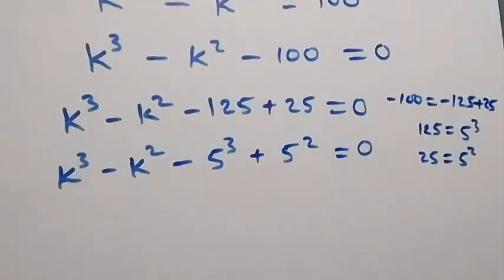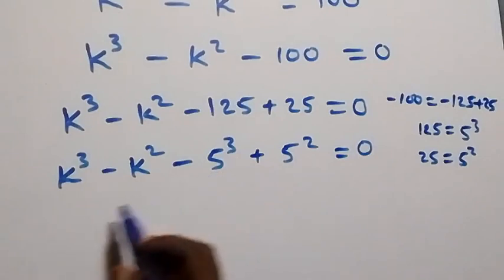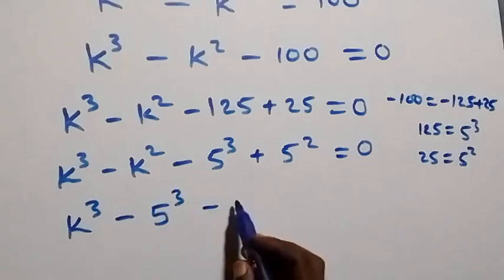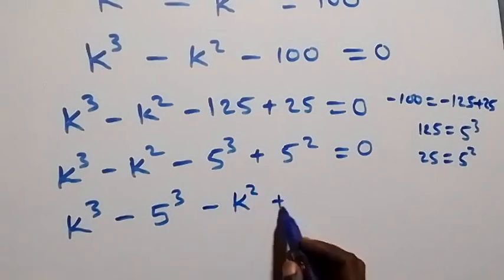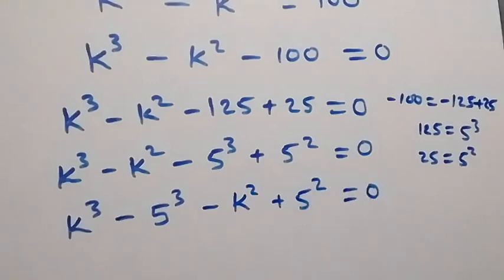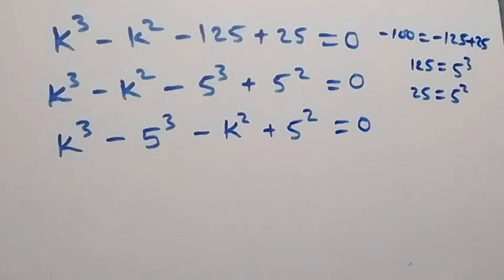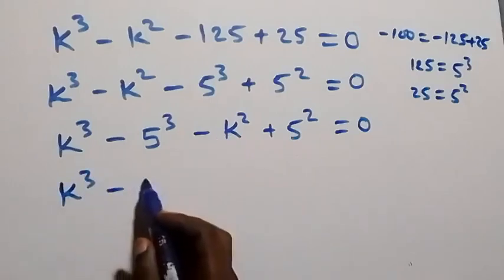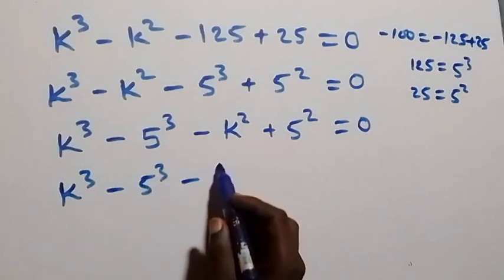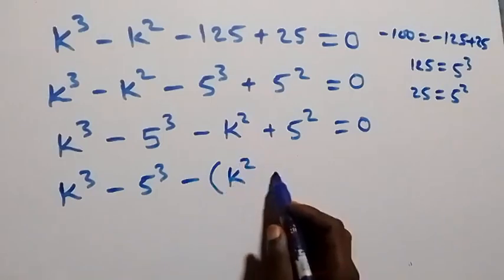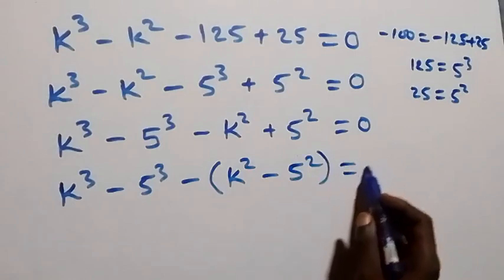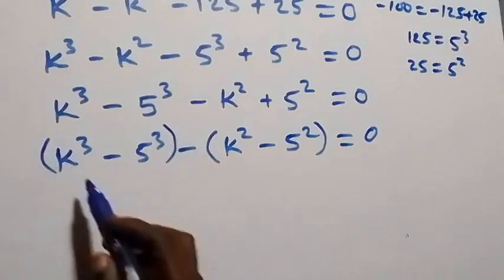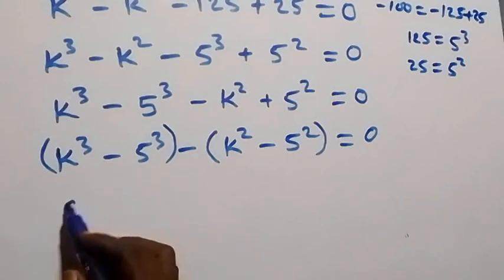What we have here becomes k cubed minus k squared, then minus 5 cubed plus 5 squared. Let's group the cubes together: we have k cubed minus 5 cubed, then minus k squared plus 5 squared, equals zero. We factor out a minus as well, giving k cubed minus 5 cubed, minus into bracket k squared minus 5 squared, which equals zero.